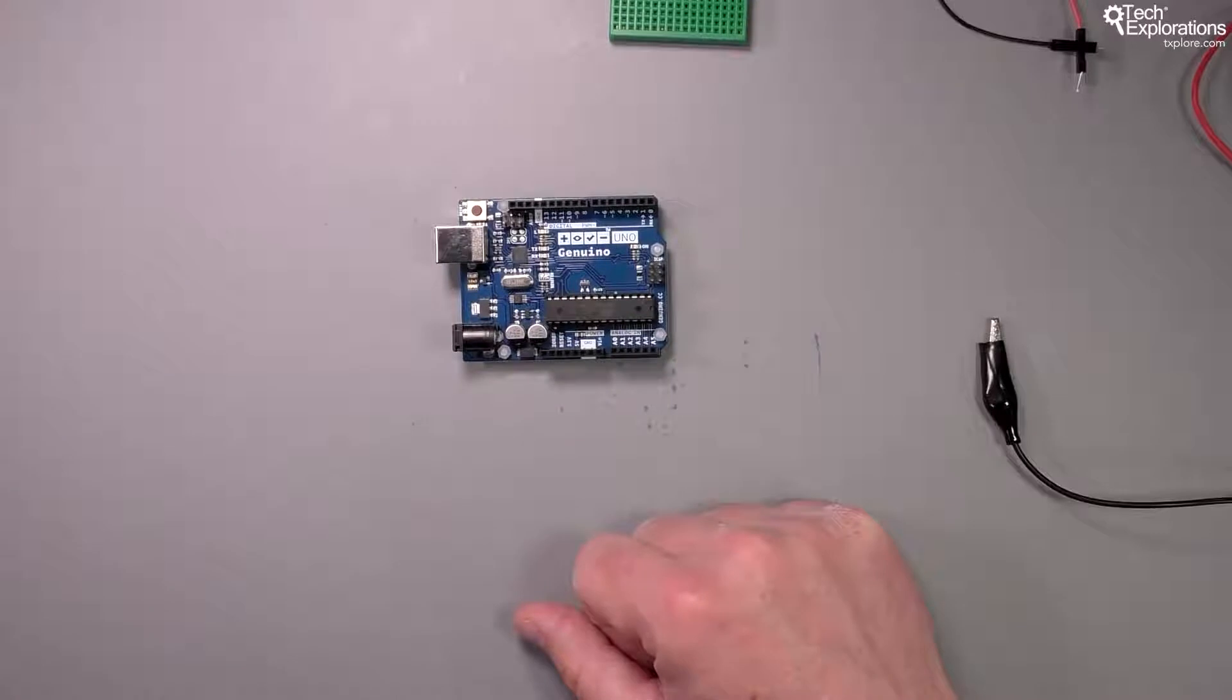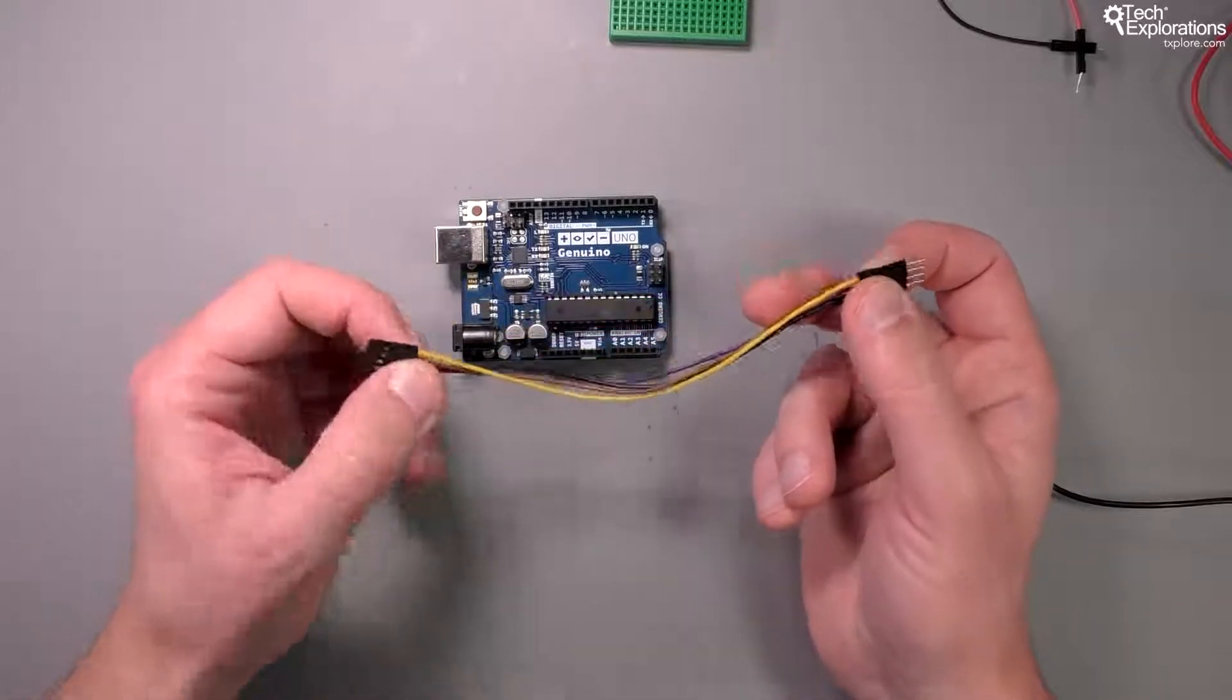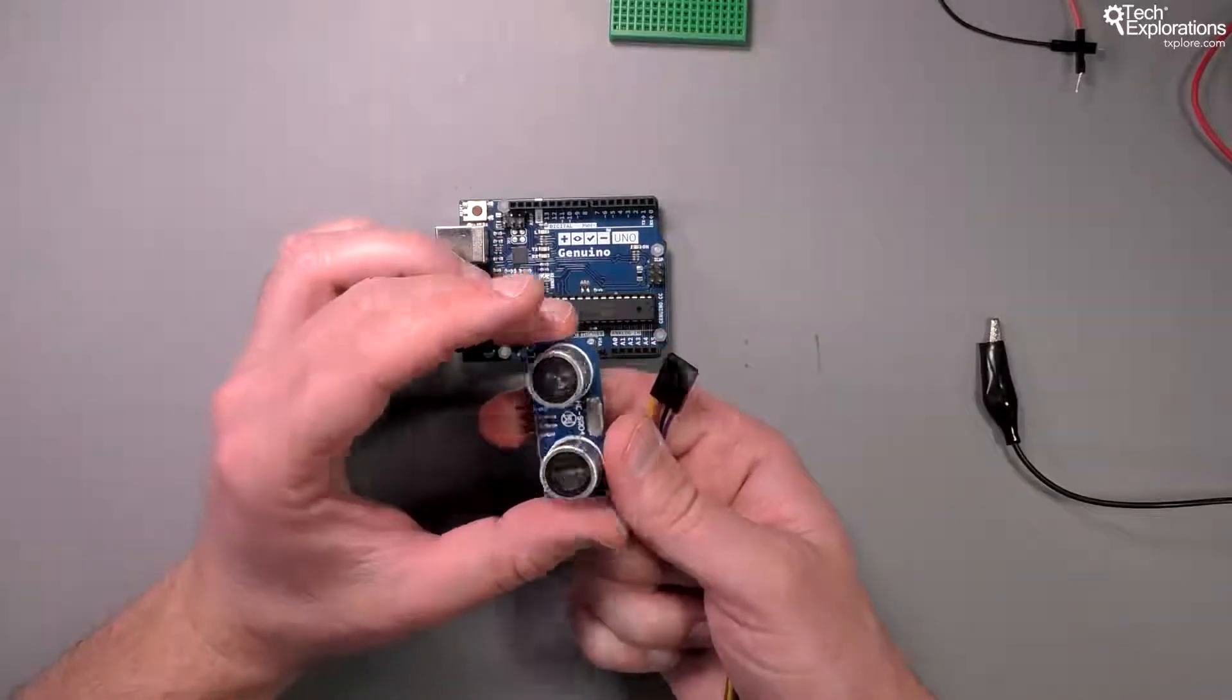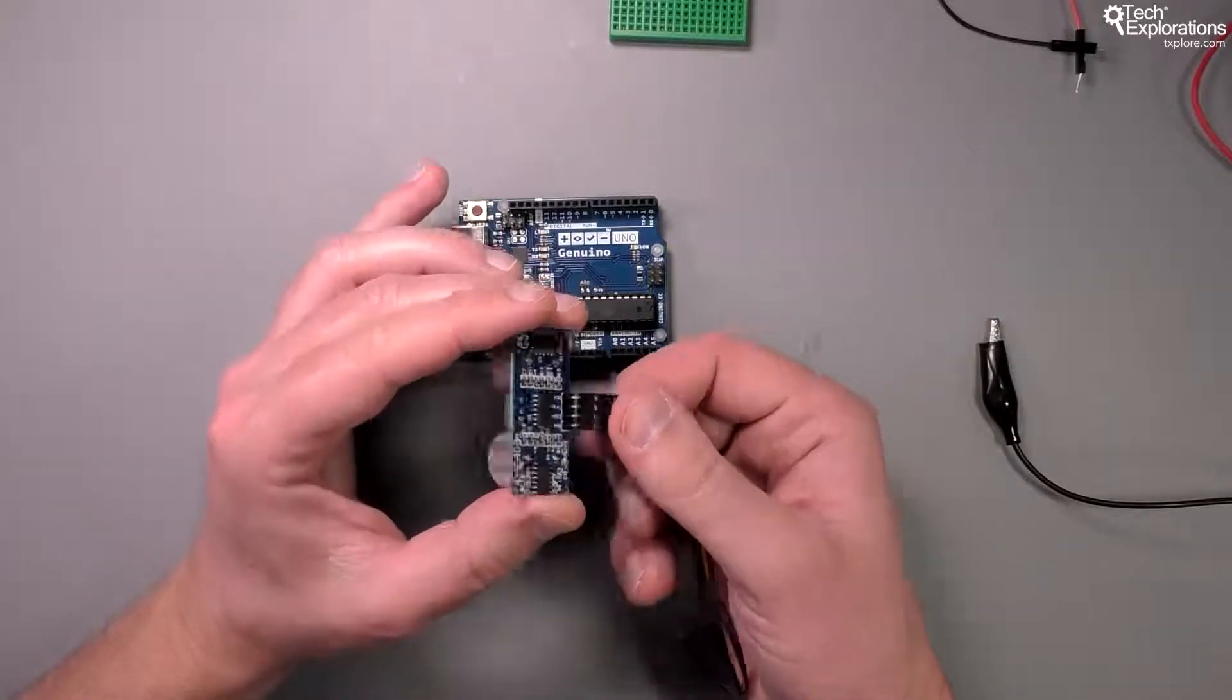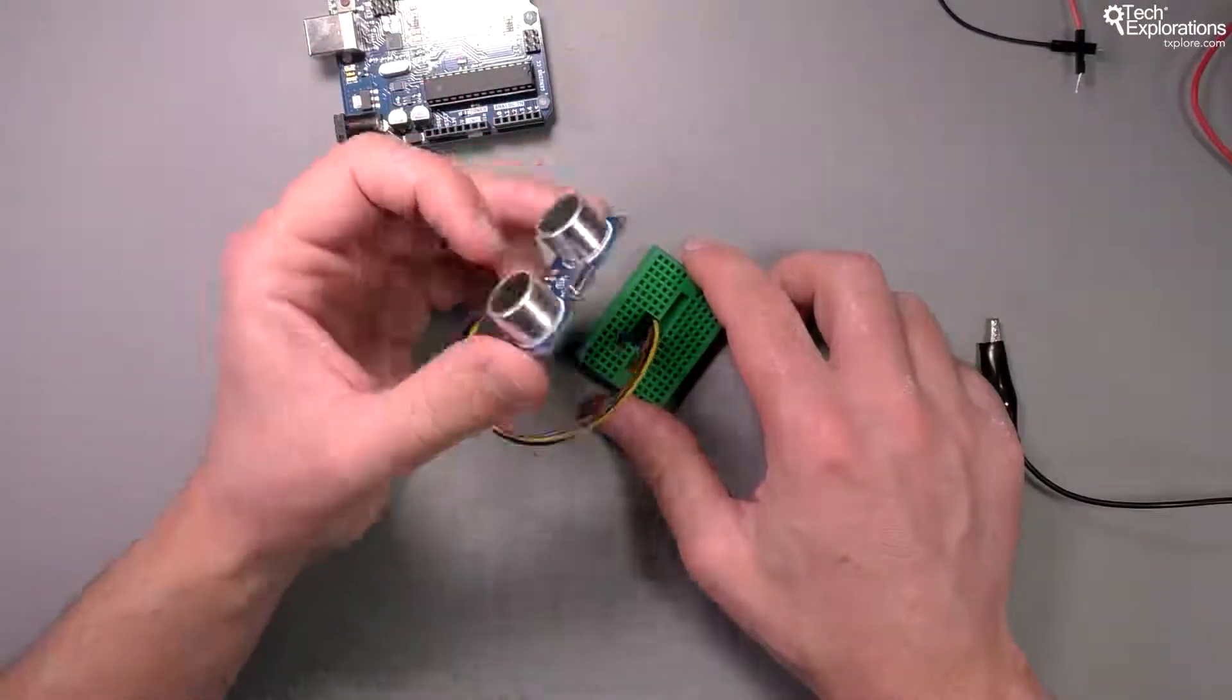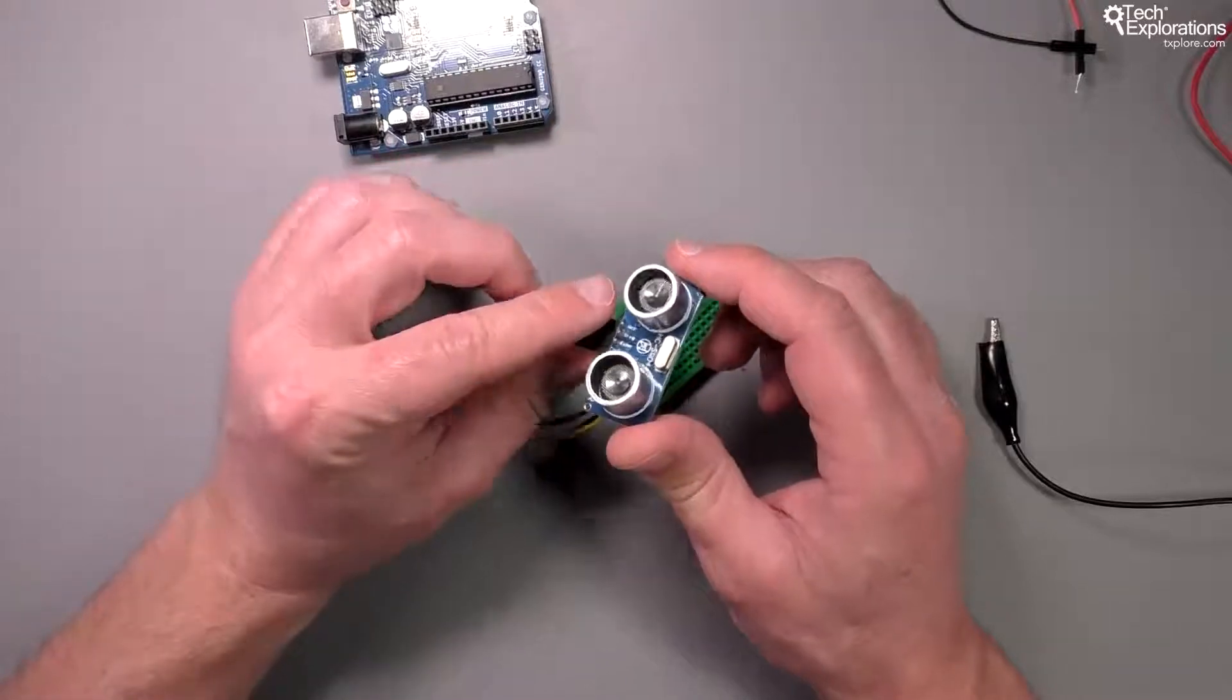Another commonly used type of jumper wire is this one here - a female to male jumper wire. The nice thing about that is that you can use it with a device like this ultrasonic distance sensor. You can just plug it into the header of the sensor and then from there onto your breadboard. So then you've got your sensor freely movable. You can attach it at some other part of perhaps a project box of your project.